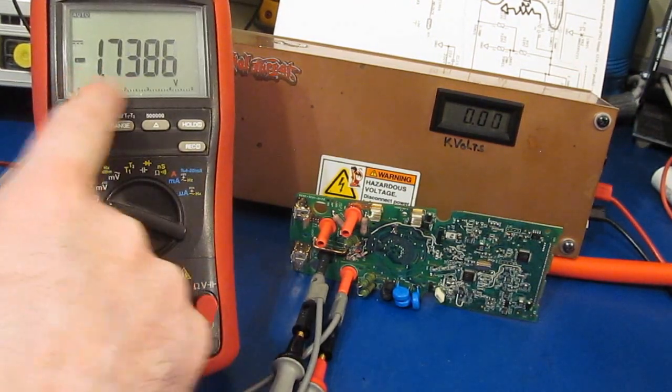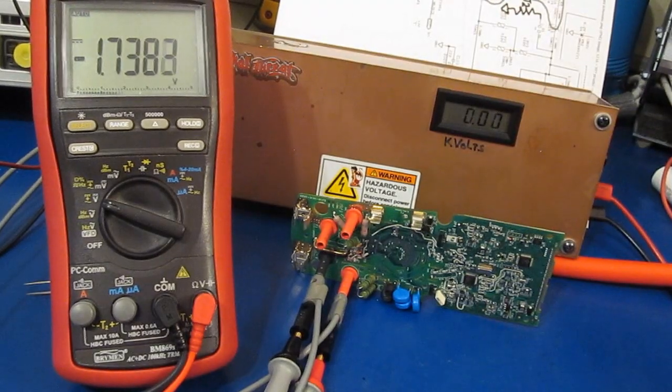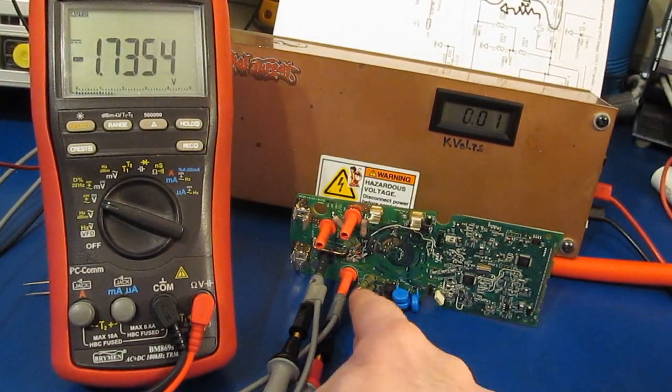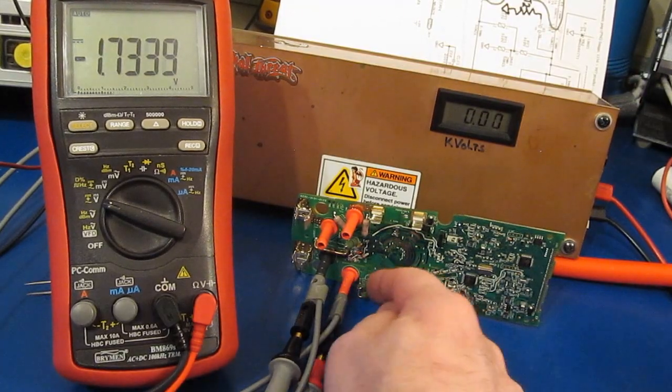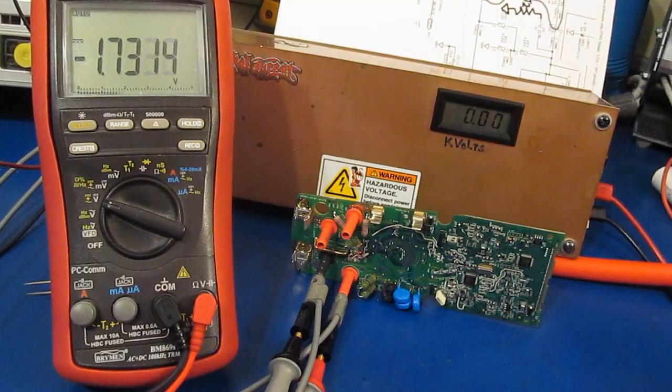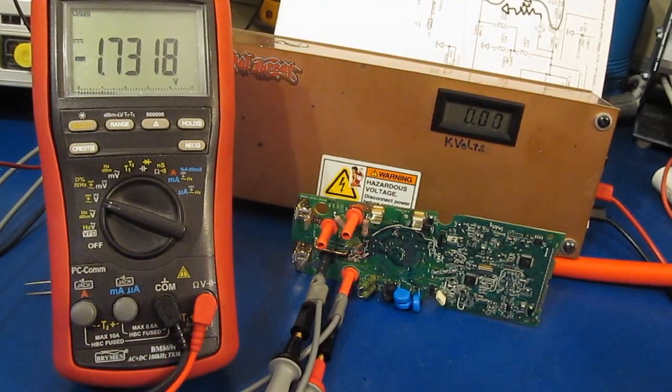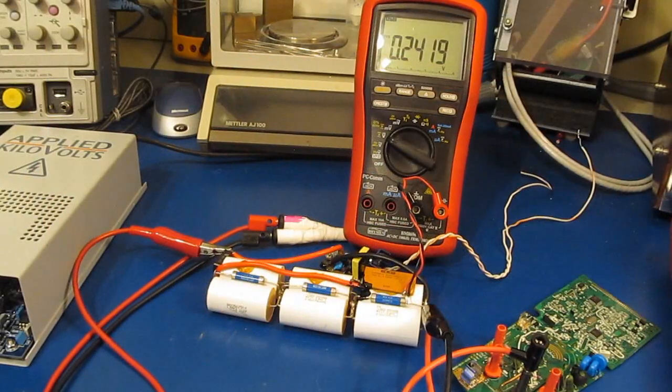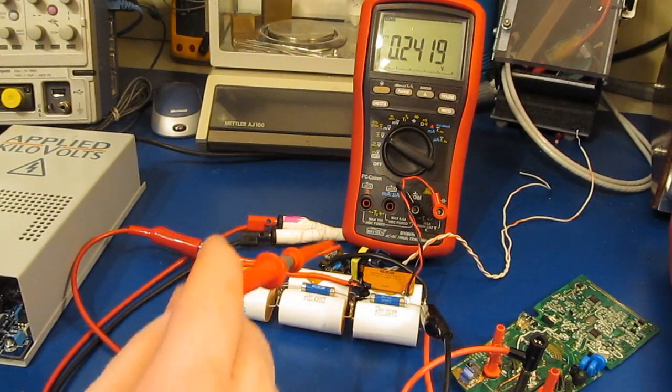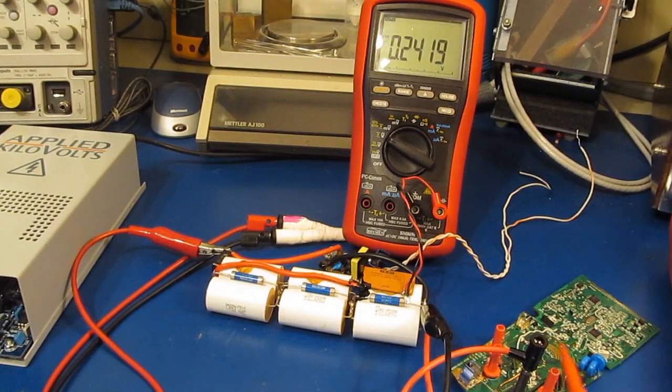Let's just take our Bryman BM 869s now and we'll attach that across the inputs of the meter. Now we can go ahead and start turning up our input voltage, and you'll notice that basically the power supply immediately starts folding back. You can see we only get about 1.7 volts or so out of this power supply, so we need a lot beefier power supply to drive the input of this. Again the input impedance here is 2k ohms, so if we take 2000 volts divided by 2000 ohms we need a one amp power supply - that's quite a bit. Of course we can't get enough current out of this little fly swatter power supply to overcome the 2k input impedance of our Bryman BM 789.